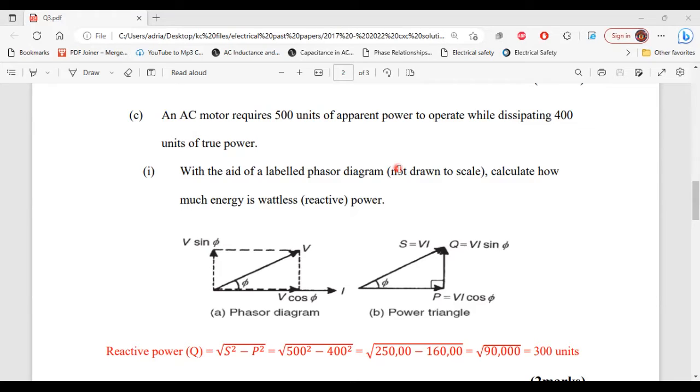We were already given the value for our apparent power, which is 500 units. We were also given the value for the true power, which is 400 units. So in order to calculate the reactive power, we're going to use the power triangle. So what this means is that for our apparent power, S would equal to 500 units. For our true power, P would equal to 400 units. And the question is asking us to find the reactive power, which is Q. So in order to find Q, we will have to use Pythagoras theorem.